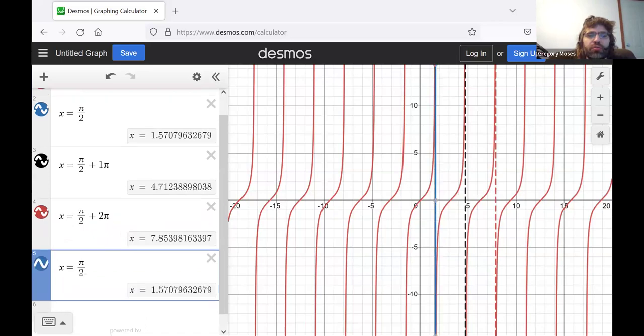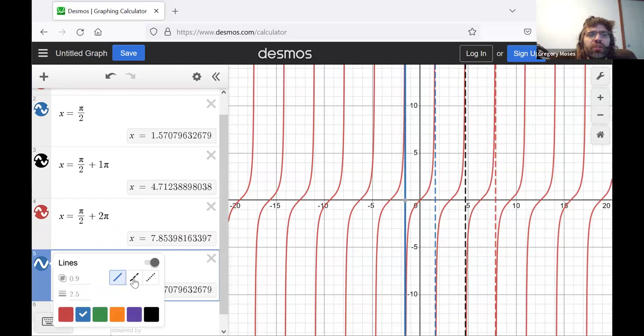There's a vertical asymptote at pi over 2 minus pi.